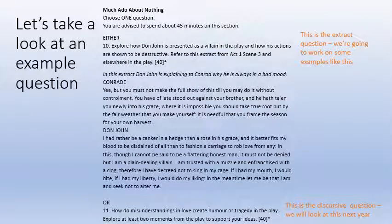This is how it looks at GCSE: you choose one question and you're advised to spend 45 minutes on this section. You can either pick the question that uses an extract — which is what most people do — or, if there's a particularly straightforward essay question, you can do that instead. The extract question is: 'Explore how Don John is presented as a villain in the play and how his actions are shown to be destructive. Refer to this extract from Act 1, Scene 3 and elsewhere in the play.' Here is the extract — in it, Don John is explaining to Conrad why he is always in a bad mood.